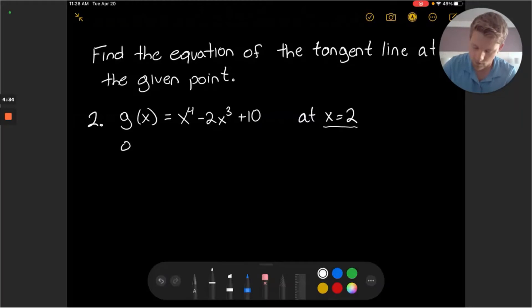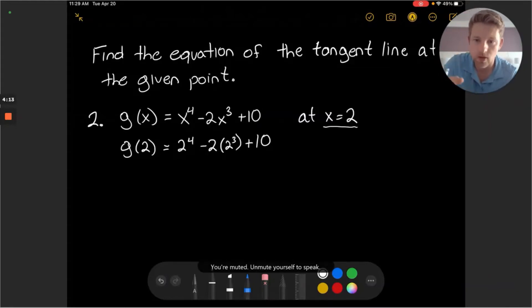If I take the function value g of 2, I can calculate this as 2 to the fourth power minus 2 times 2 to the third plus 10. And if we look at this closely, we really have 2 to the fourth minus another 2 to the fourth power since 2 times 2 to the third is again 2 to the fourth.